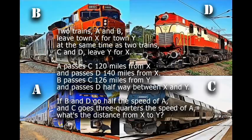If B and D go half the speed of A, and C goes three quarters the speed of A, what's the distance from X to Y?